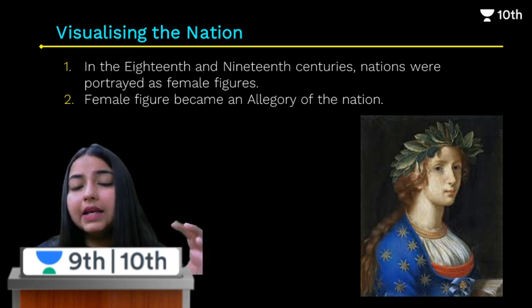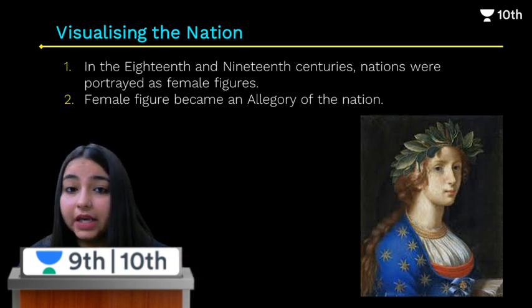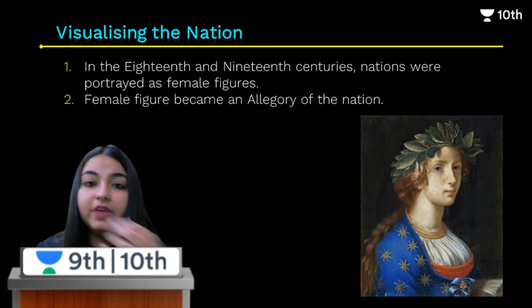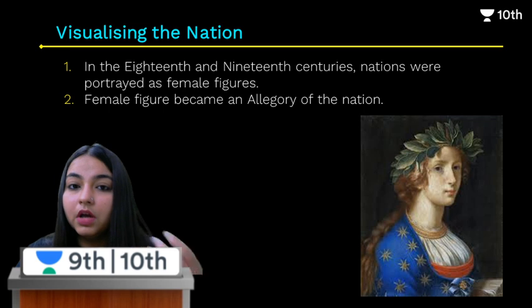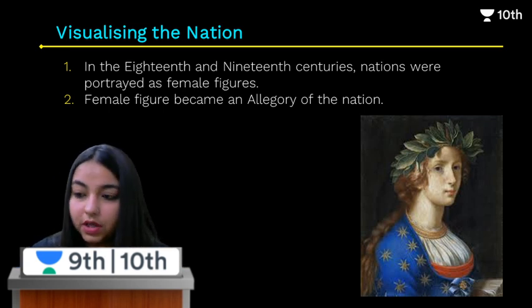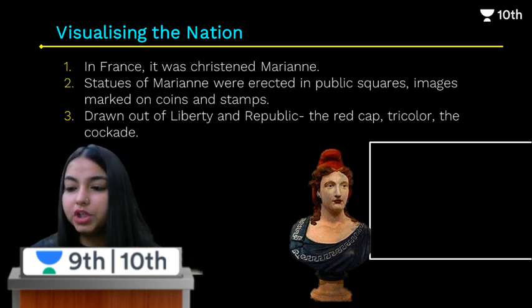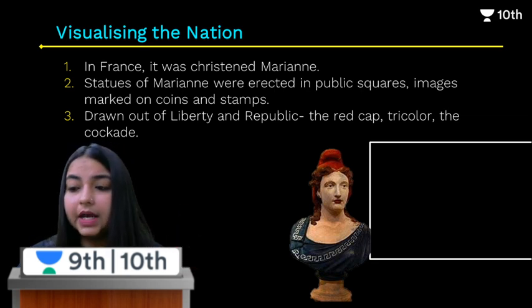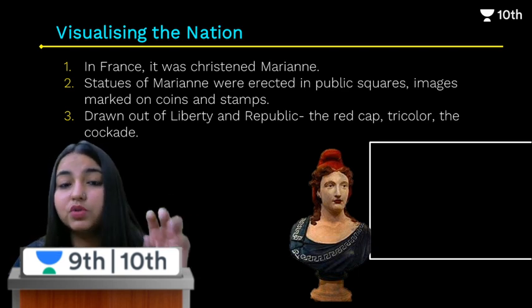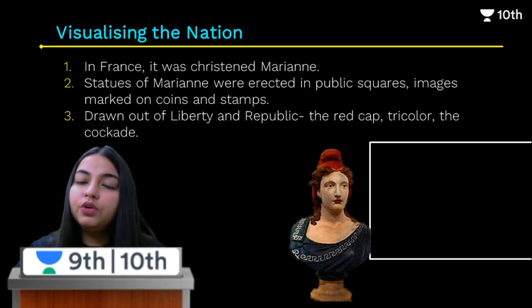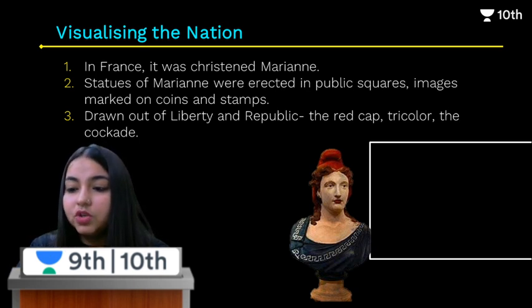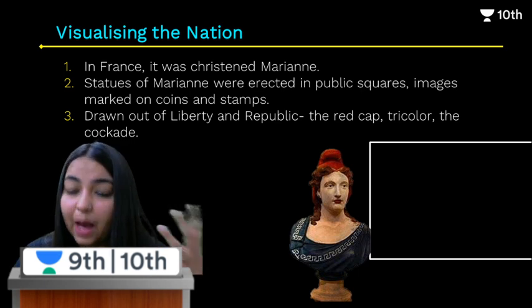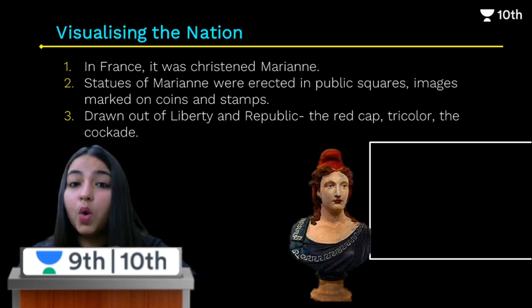Allegory is basically an abstract idea or feeling — like hatred, jealousy, envy, liberty, or equality — expressed through the use of an image or visual representation. During the French Revolution, artists used female allegories to represent the ideas of liberty, justice, and the republic. Specific symbols and objects were used — for liberty, they used a red cap or a broken chain.